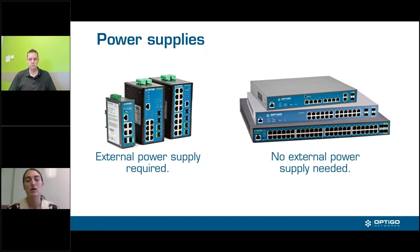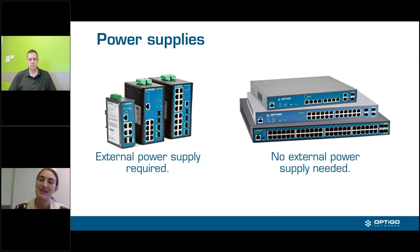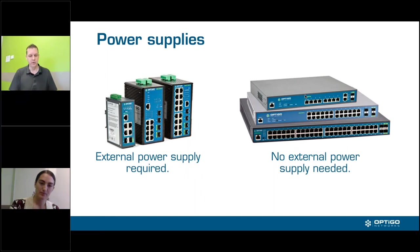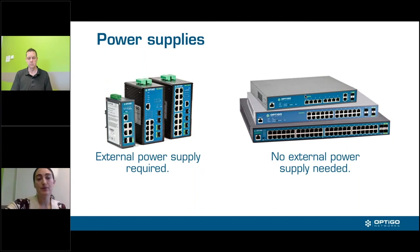For power supplies — our DIN rail-mountable industrial switches require an external power supply, so you need to make sure you order that, whether from us or another supplier. The rack-mountable switches have an internal power supply, so you don't need to add one to your order. Note that if you're mounting switches in a control cabinet, power supply requirements may change based on those specifications. Because of the additional external power supply cost, the rack-mounted solution can actually be a better option affordability-wise, including installation.